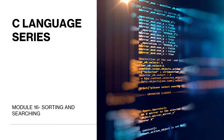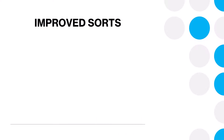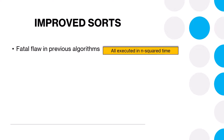Hello and welcome to the second session on sorting and searching. We're going to talk about improved sorts today. Now all the algorithms we saw last time have a fatal flaw. What is the flaw? They all execute at n squared time.